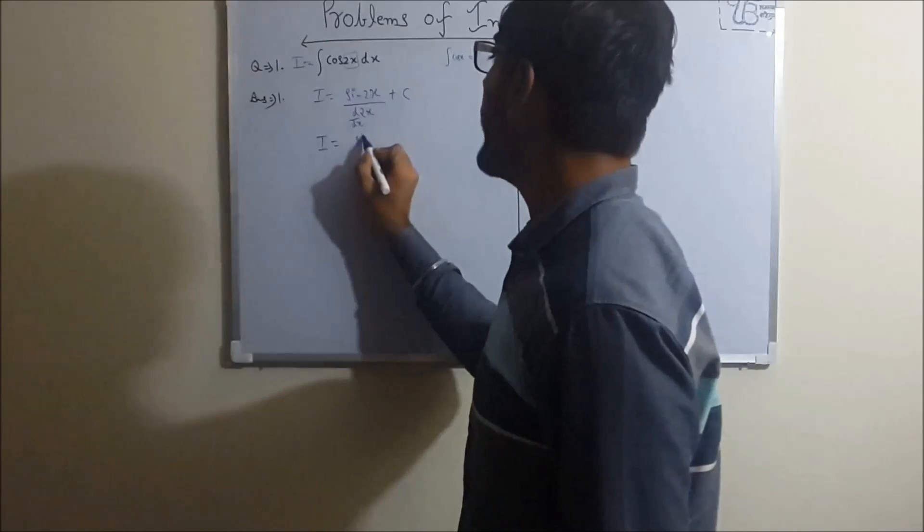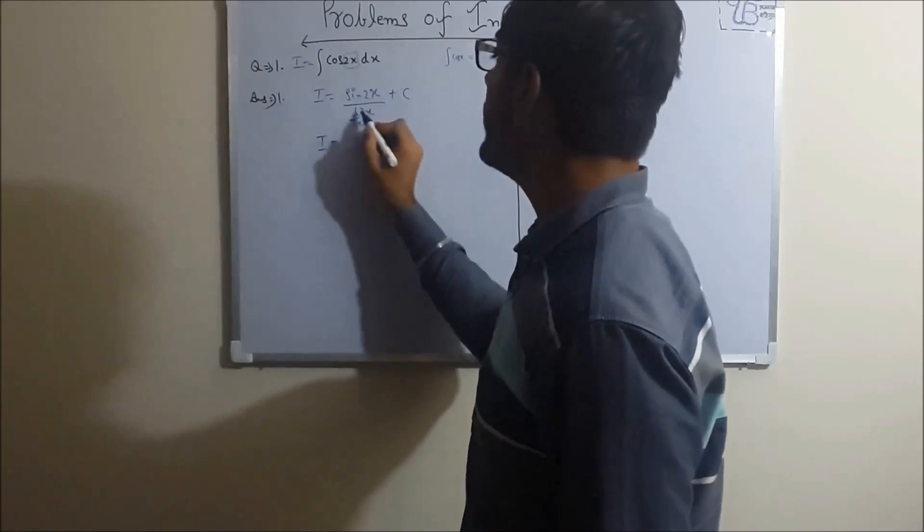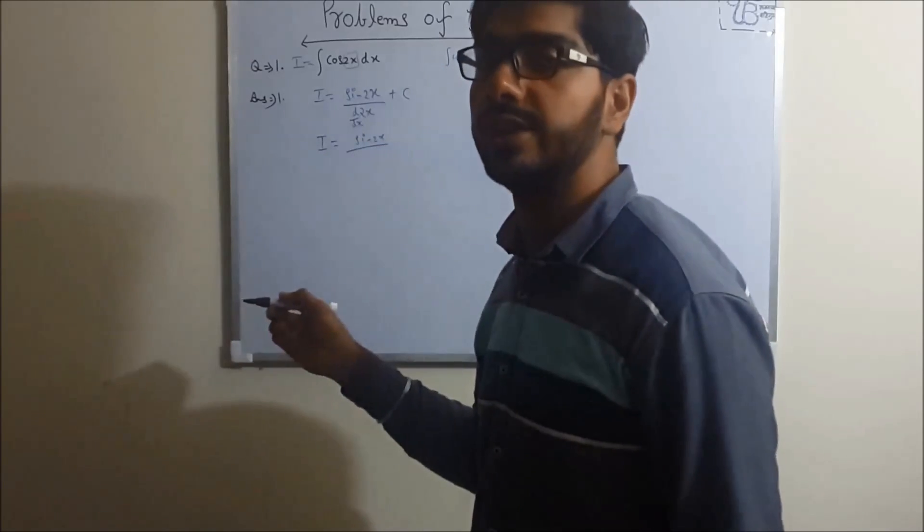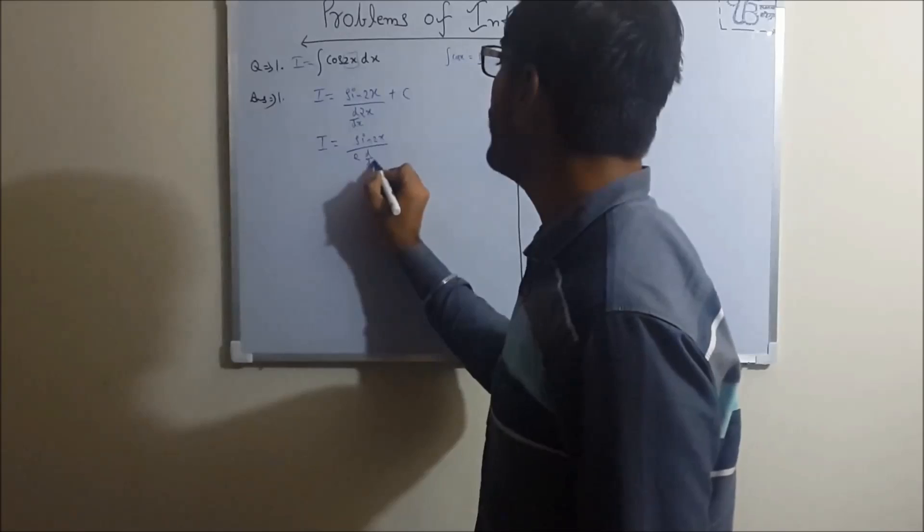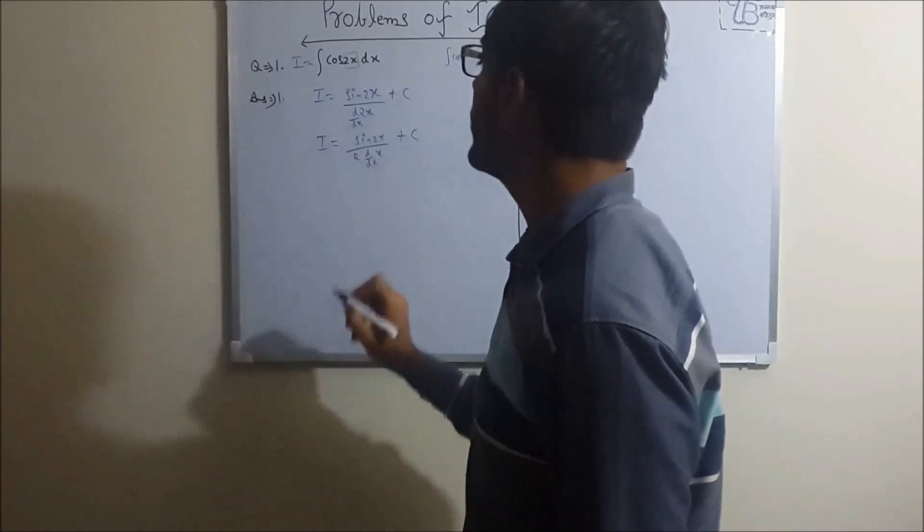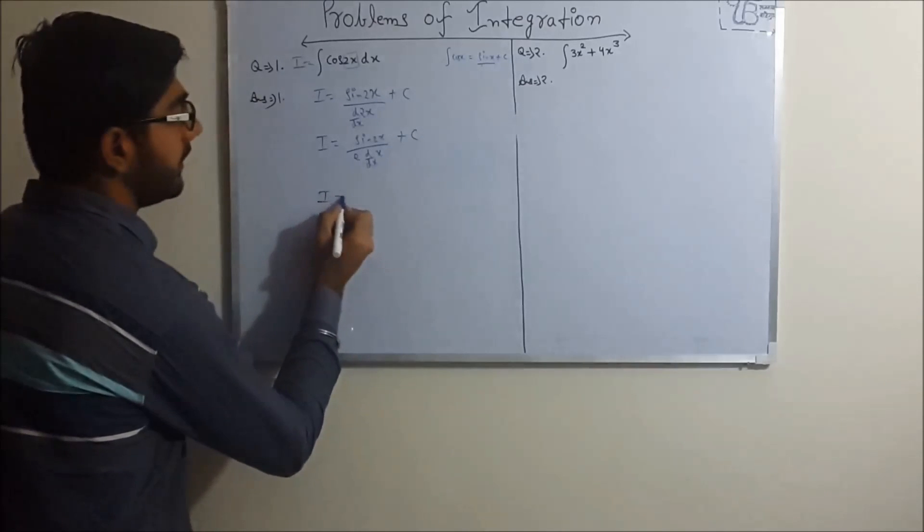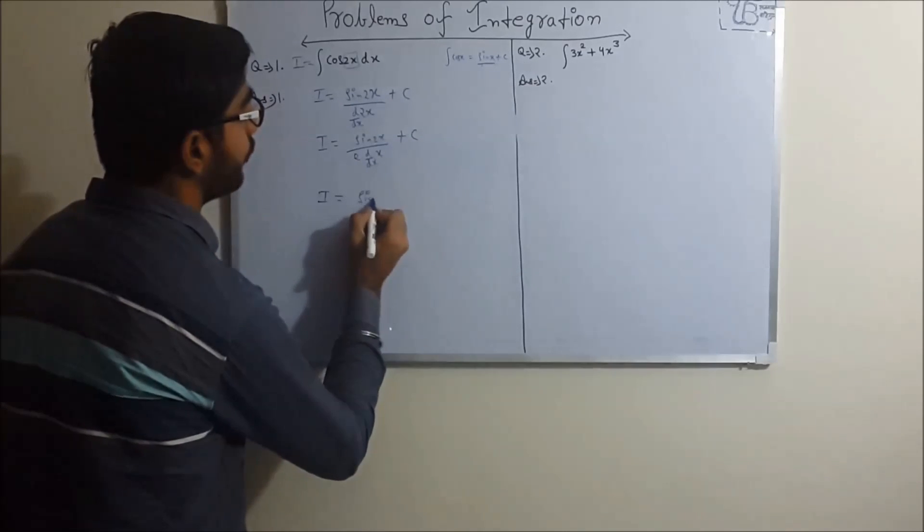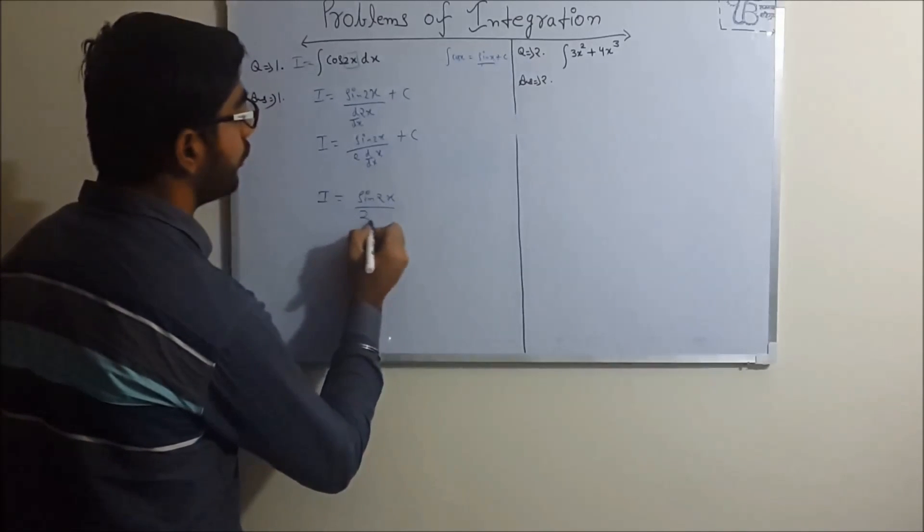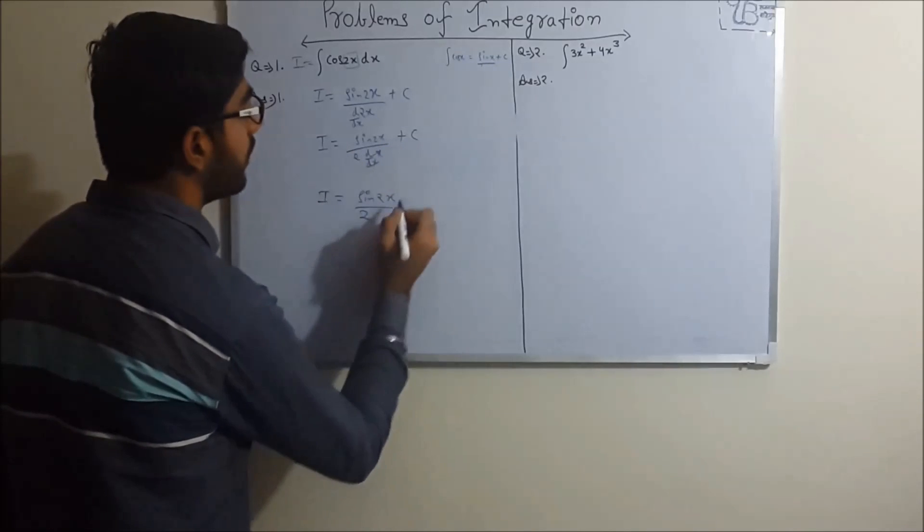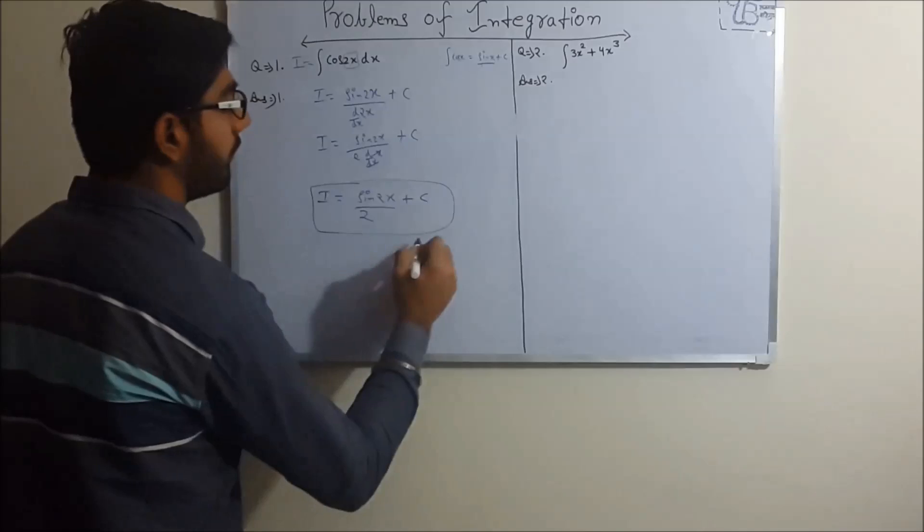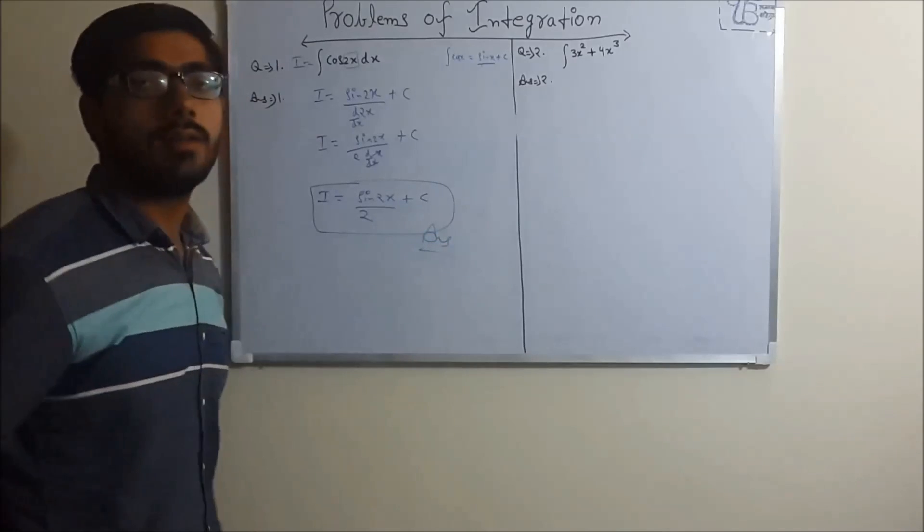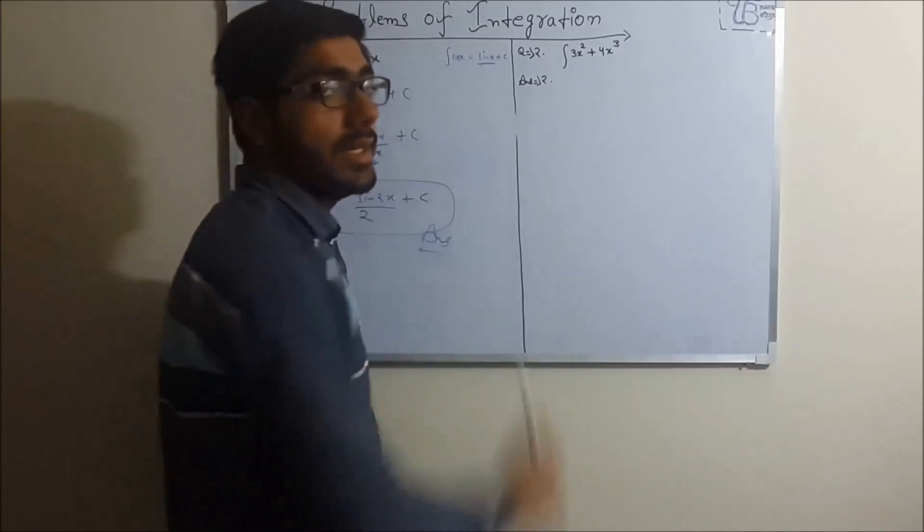Plus c. So I equals sin of 2x upon 2. Differentiation will give 2 friends, so 2 will come. And derivative of x plus c. So this is I equals sin of 2x upon 2, this gets cancelled, so 1, and plus c. So this is our answer.